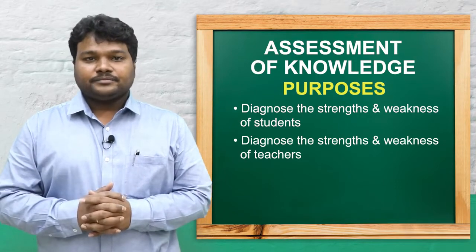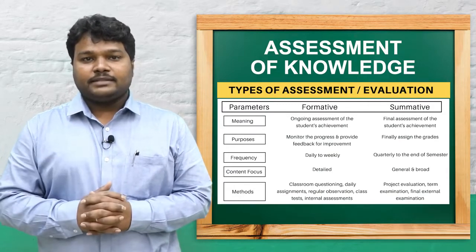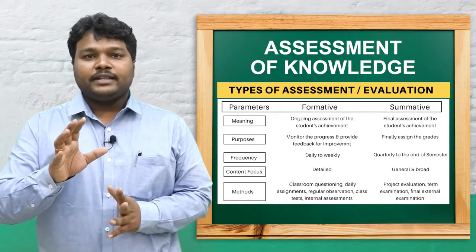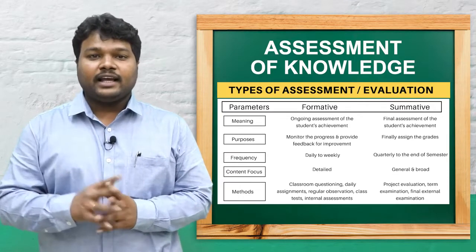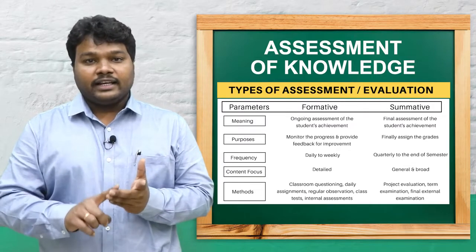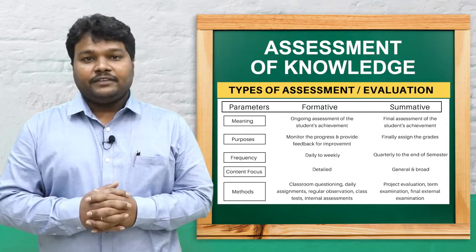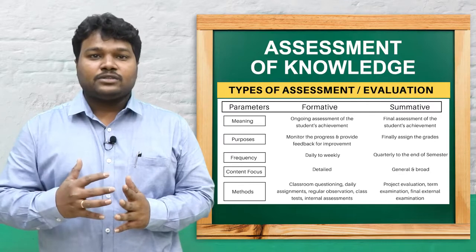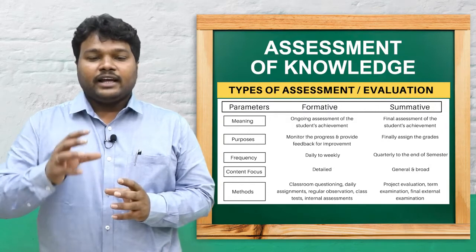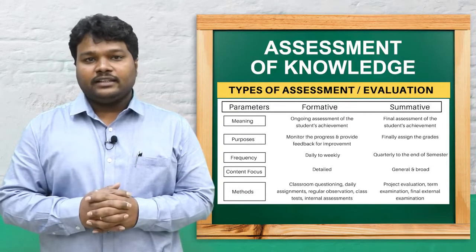There are two main methods of assessment: formative assessment and summative assessment. Formative assessment is an ongoing assessment that takes place in educational institutions. Examples include unit tests, slip tests, and quarterly examinations. It helps students identify learning difficulties and helps teachers develop students in a cognitive way, addressing areas where students feel difficulty.